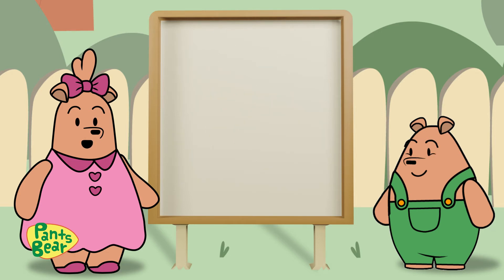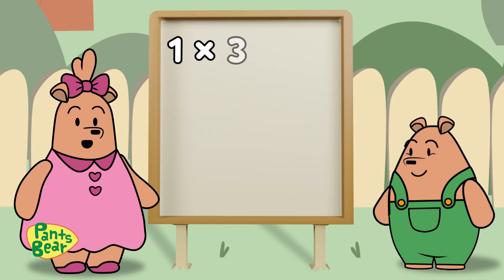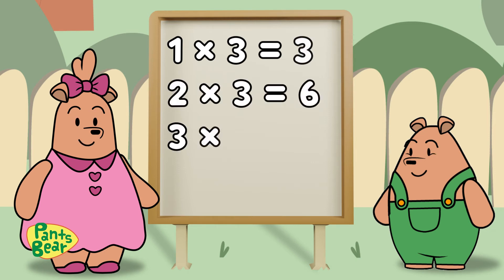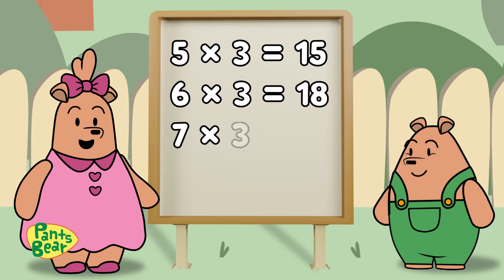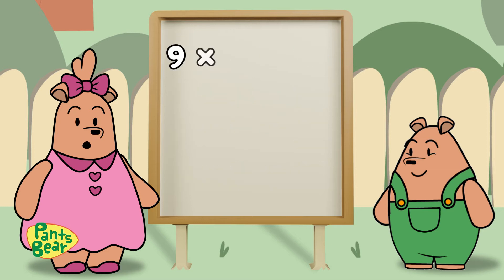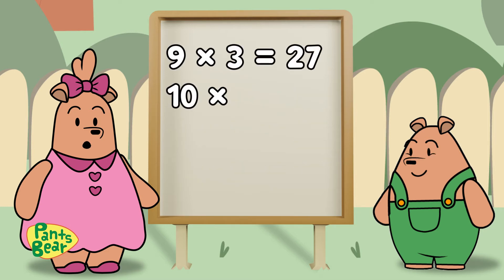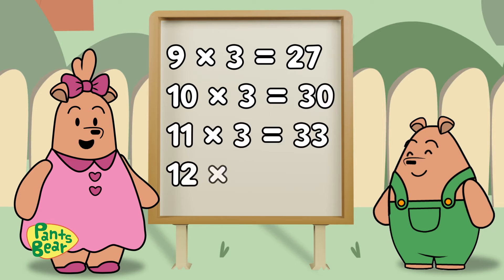Goodie! You're a master of multiplication now. Let's learn the multiplication of 3. 1×3=3, 2×3=6, 3×3=9, 4×3=12, 5×3=15, 6×3=18, 7×3=21, 8×3=24, 9×3=27, 10×3=30, 11×3=33, 12×3=36. Wow!